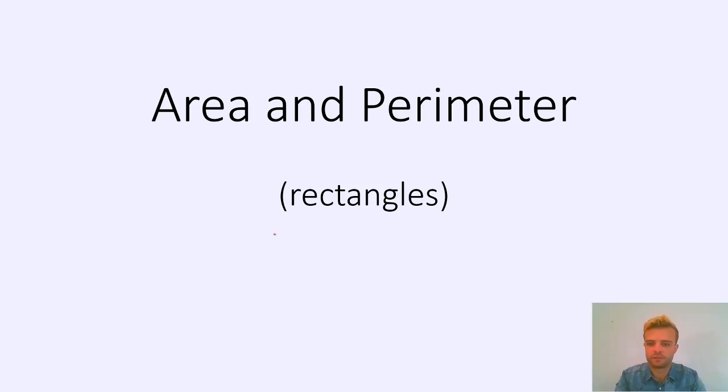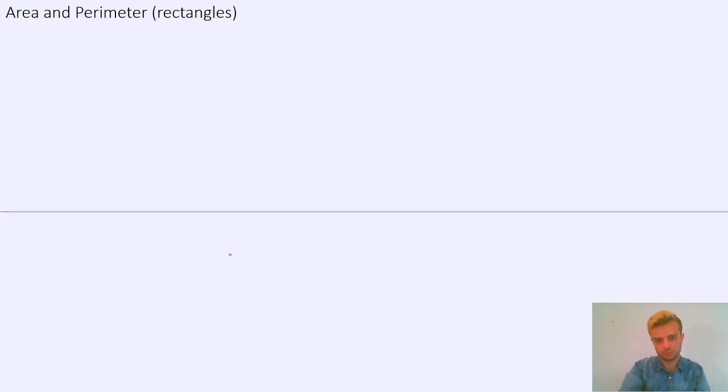Alright, so area and perimeter of rectangles. Finding the area and the perimeter of a rectangle is pretty straightforward. I think the most complicated part is just remembering which one's which and making sure you use the right formula.